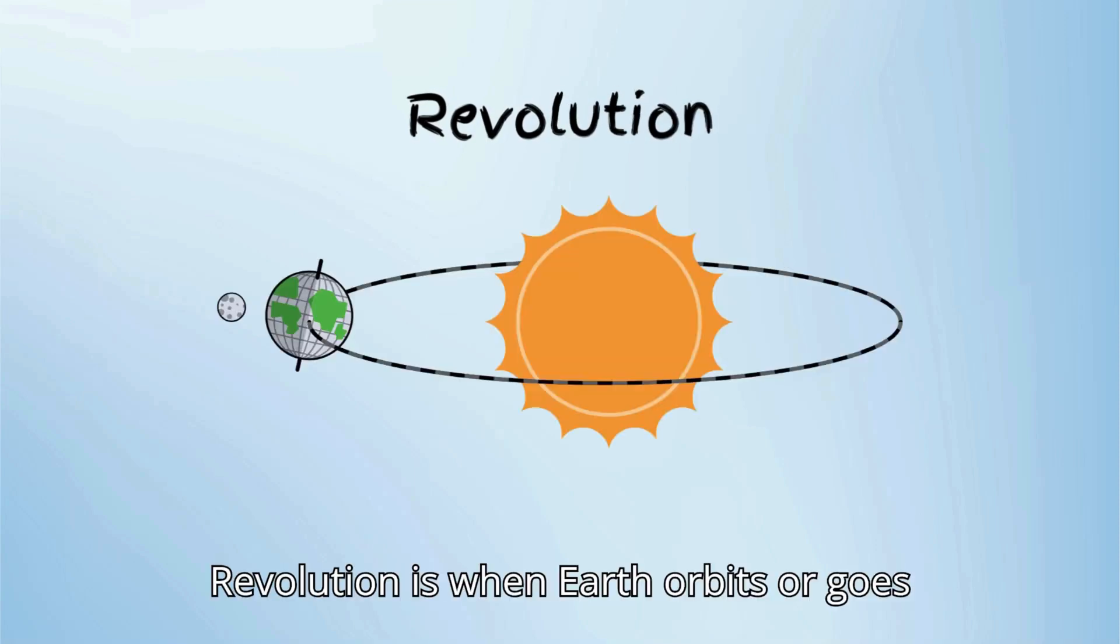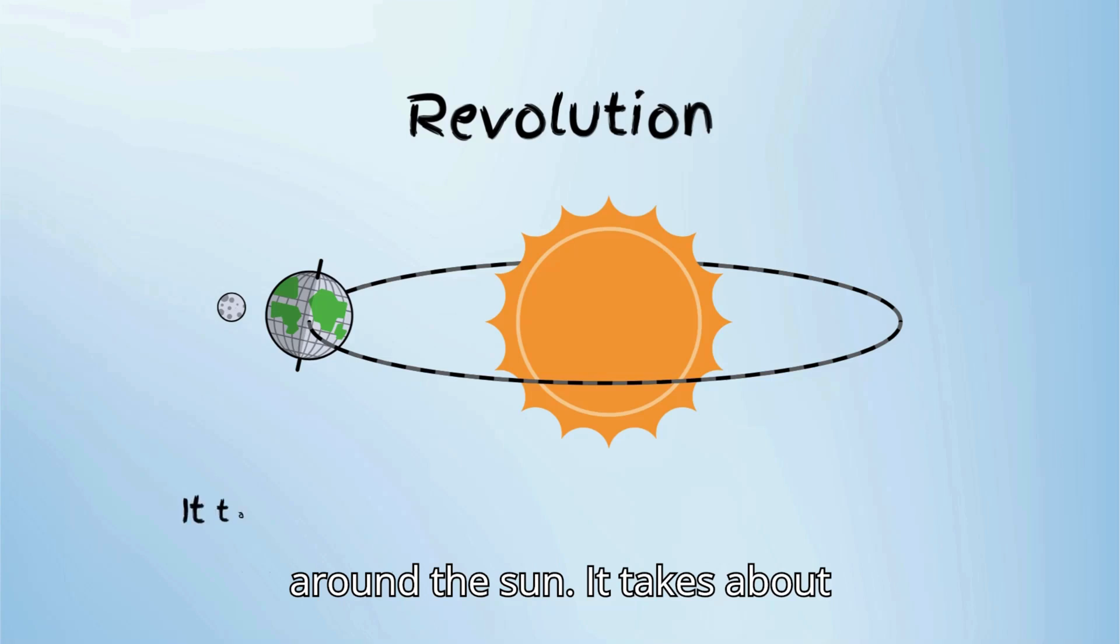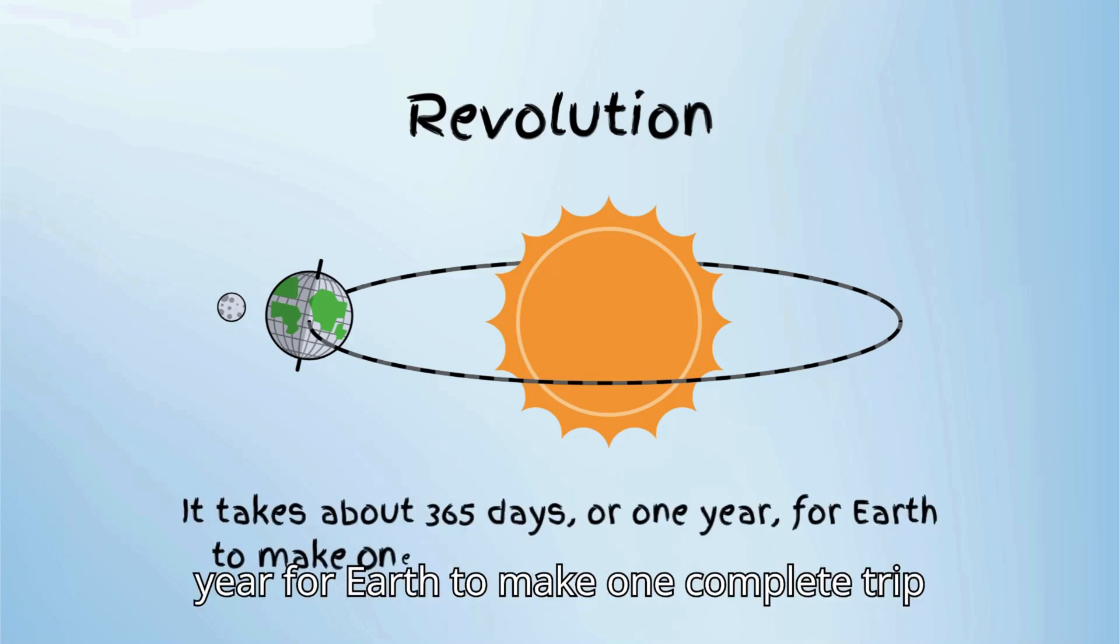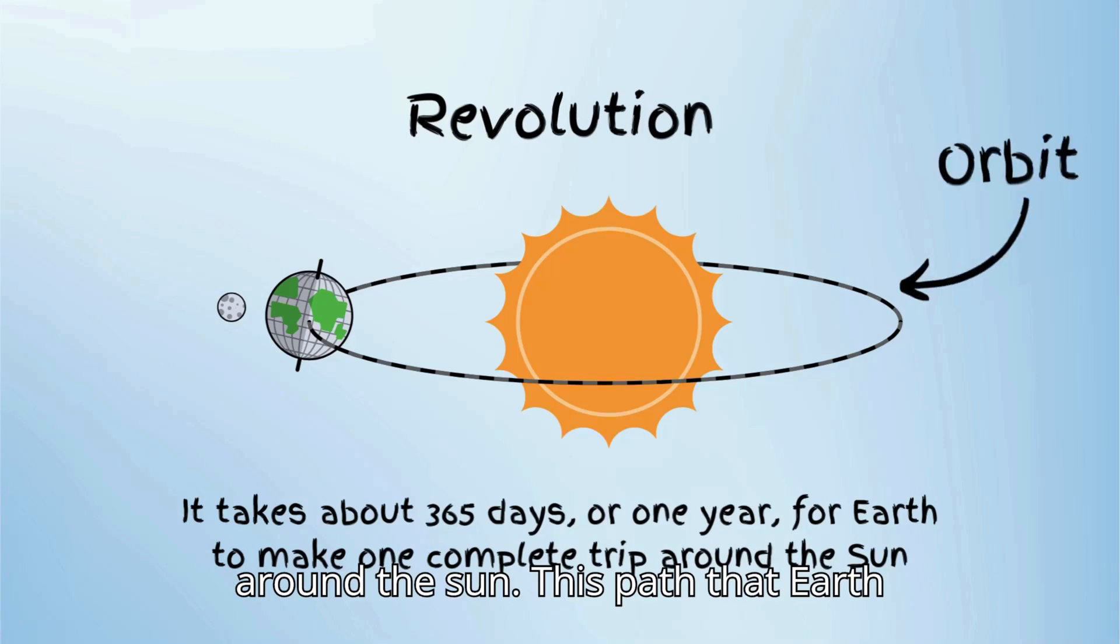Now, let's talk about revolution. Revolution is when Earth orbits or goes around the sun. It takes about 365 days, or one year, for Earth to make one complete trip around the sun. This path that Earth follows is called its orbit.